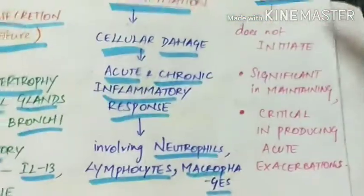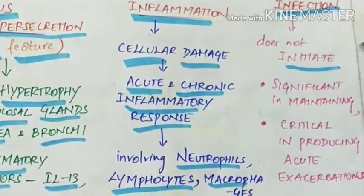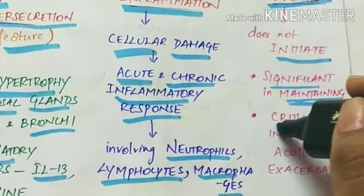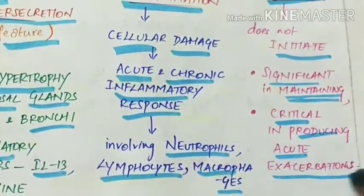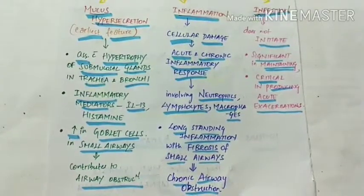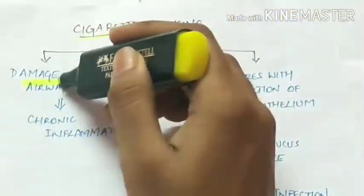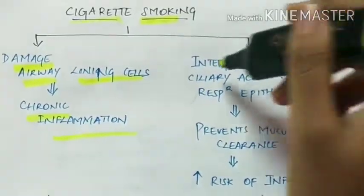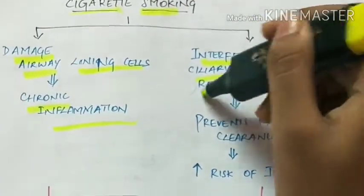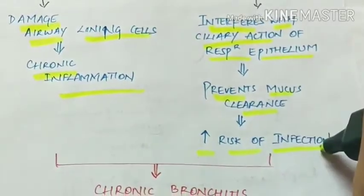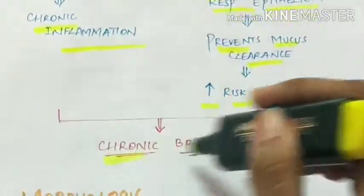Infection is not an initiating factor, but it is significant in maintaining the condition and is critical in producing acute exacerbations. Cigarette smoking leads to damage of airway lining cells causing chronic inflammation, and it also interferes with the ciliary action of the respiratory epithelium. This prevents mucus clearance, thereby increasing the risk of infection, and these together lead to chronic bronchitis.